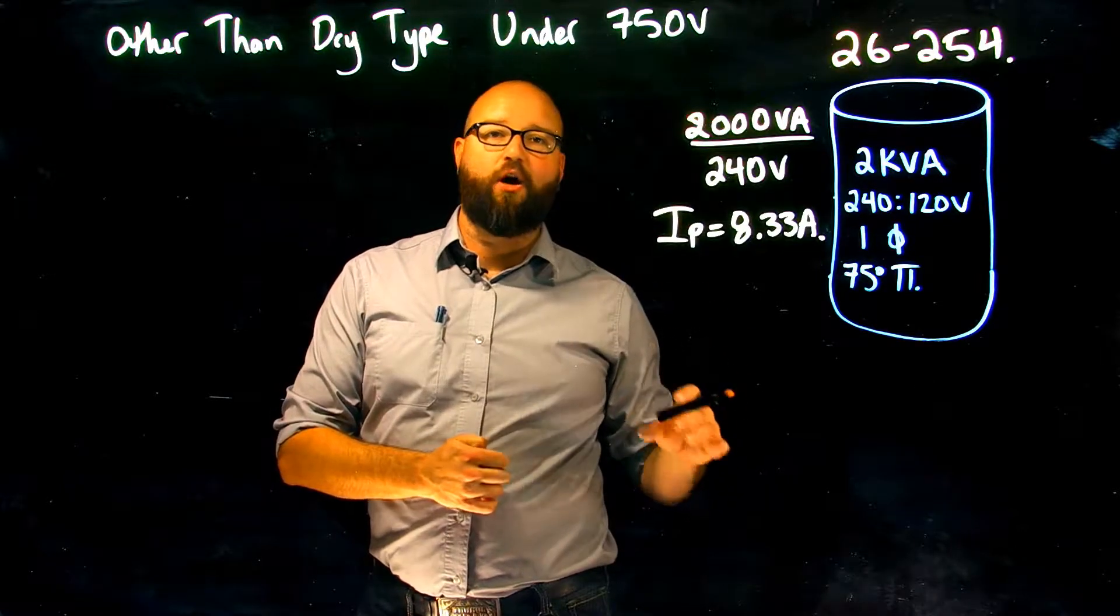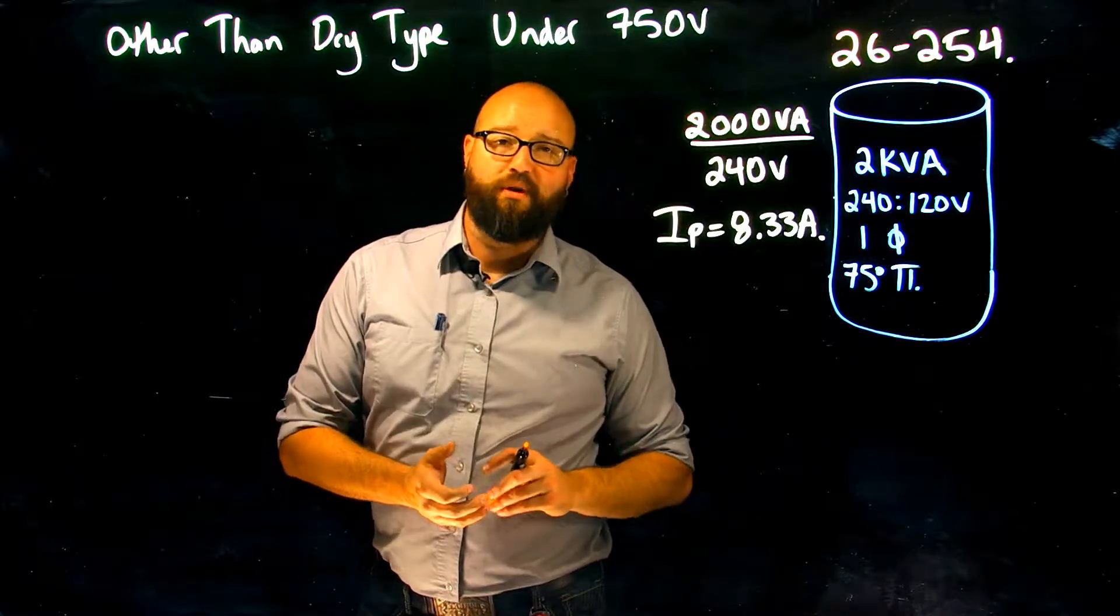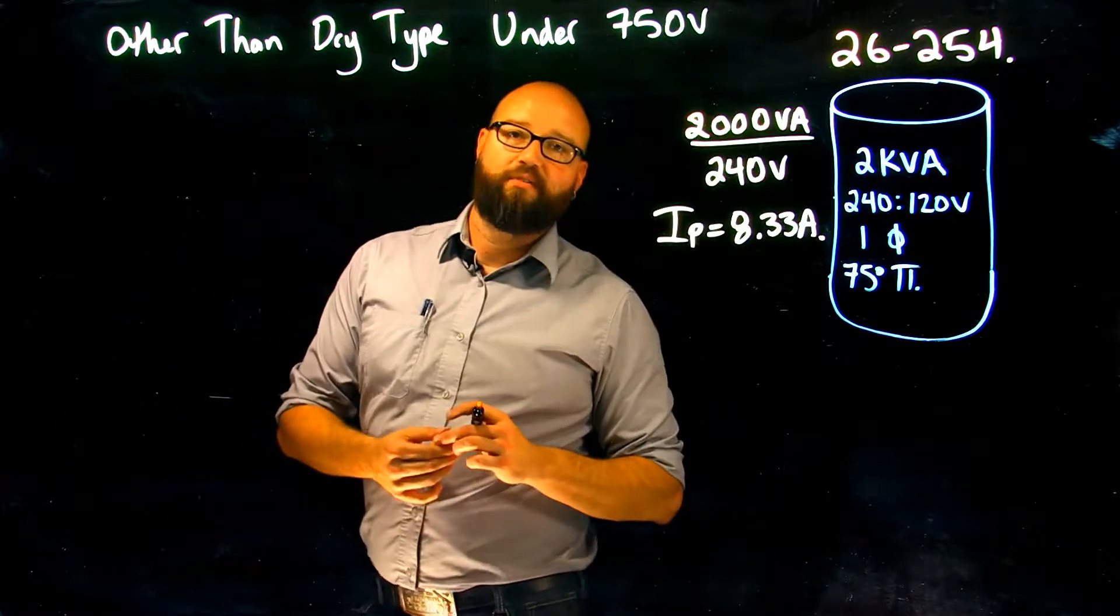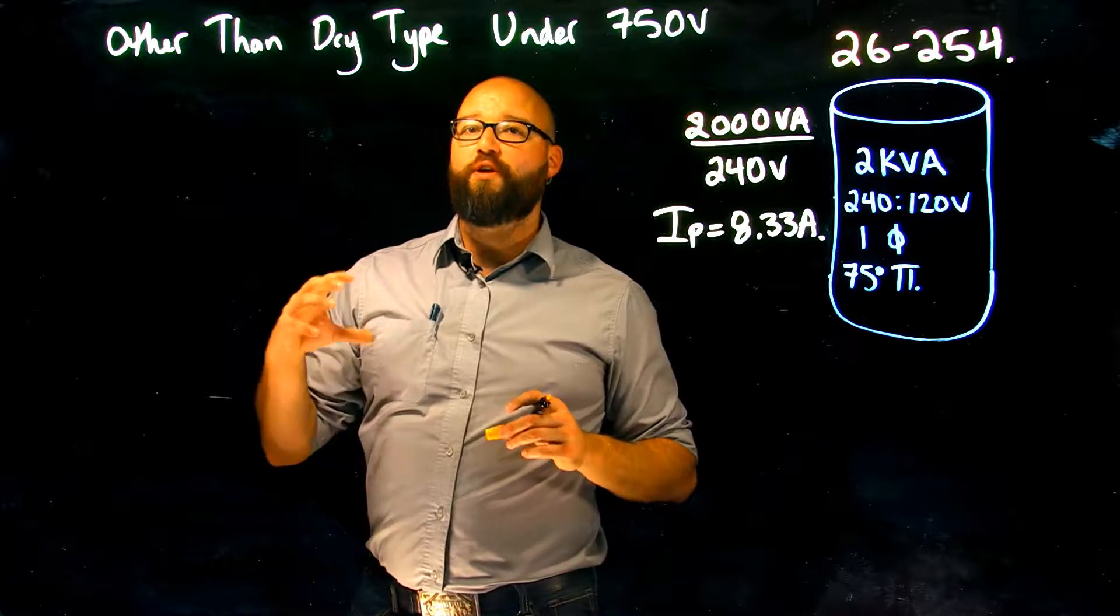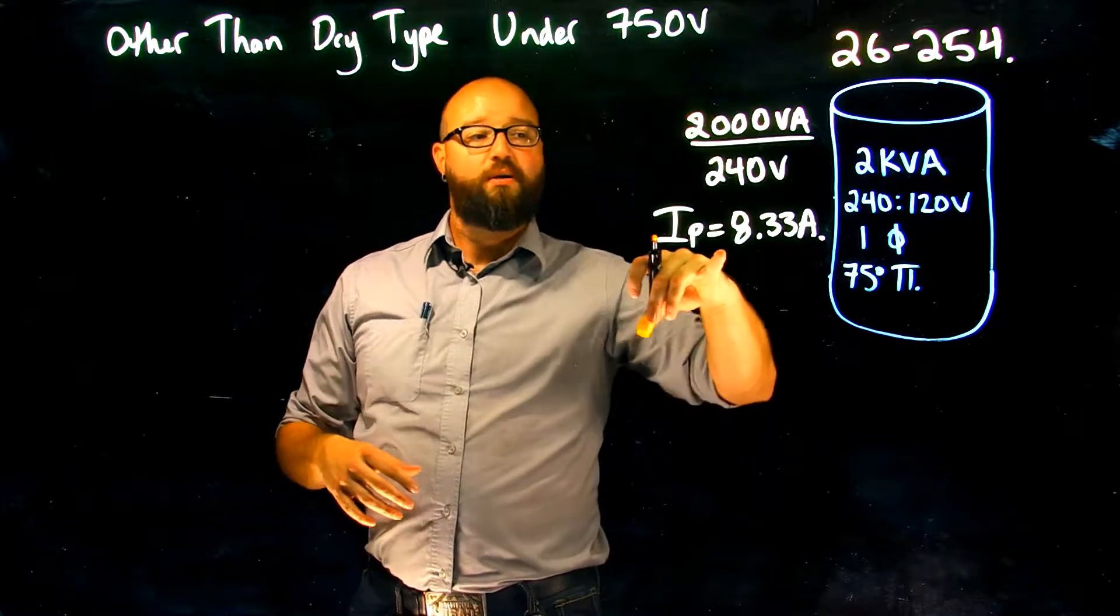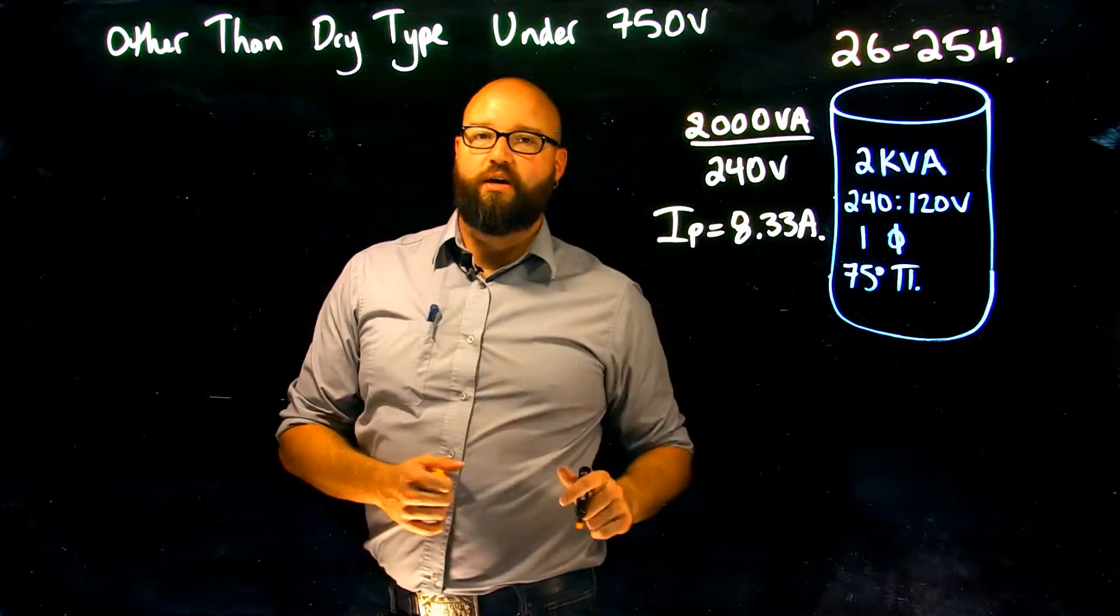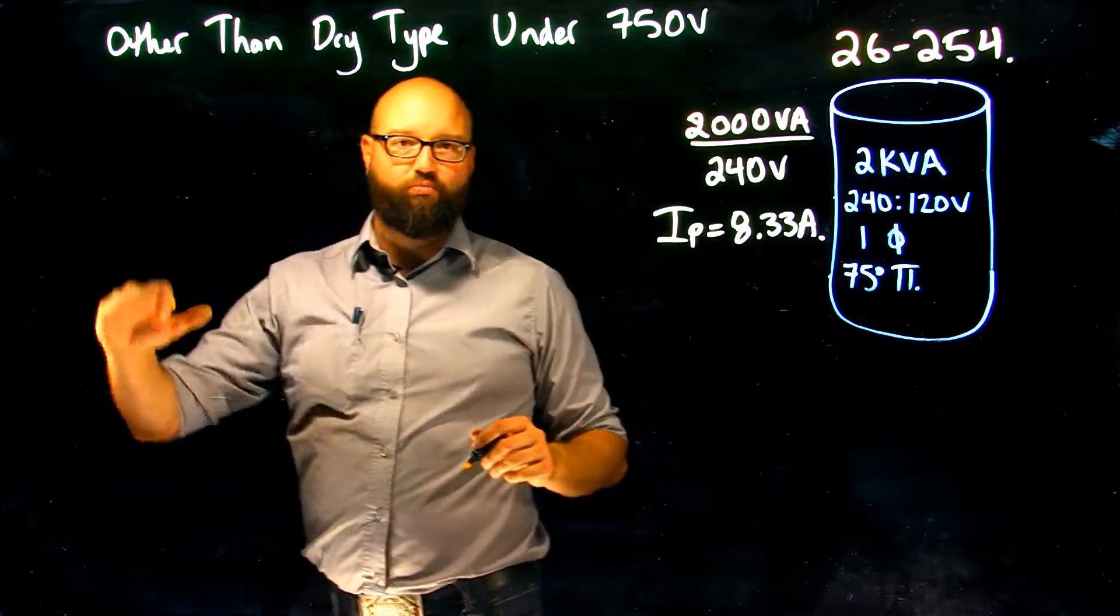But if we take a look at 2a, it actually tells us if 150 of the rated primary value is over 9 amps. So if our primary rated current is 9 amps or greater, that's where we're going to use that 150 percent. So I'm going to break this rule down into kind of a little bit of an explanation here.